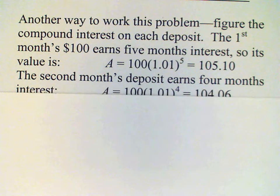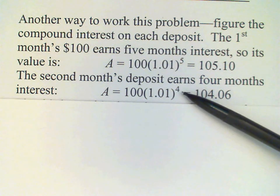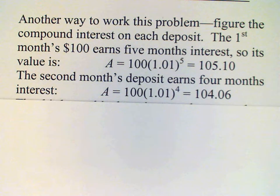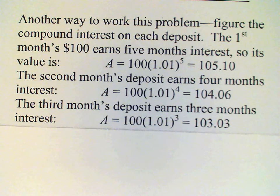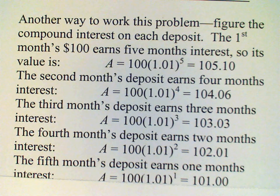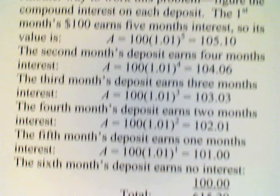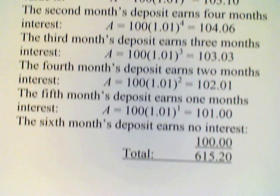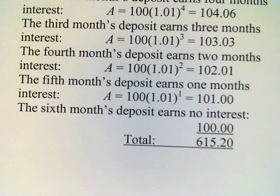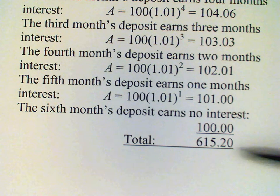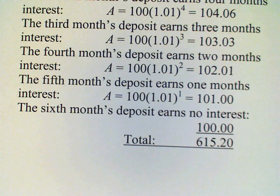The formula for the second month's deposit looks very similar — only instead of a five we have a four, because that money is only on deposit for four months. Then three, two, one. And then the last month's deposit earns no interest at all because we deposited it at the end of the sixth month. When we add all these figures up, it's no big surprise — we get the same answer that we did working it out month-to-month.